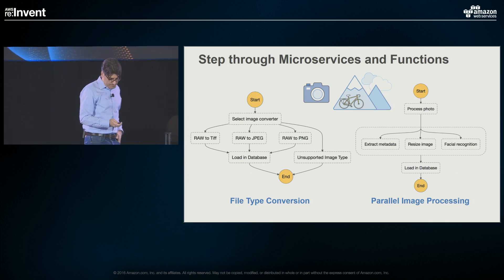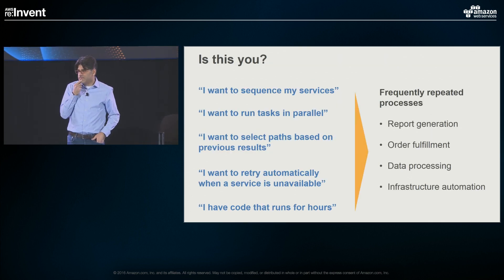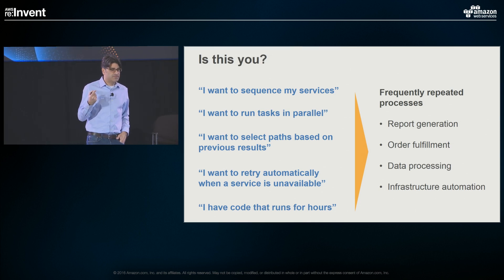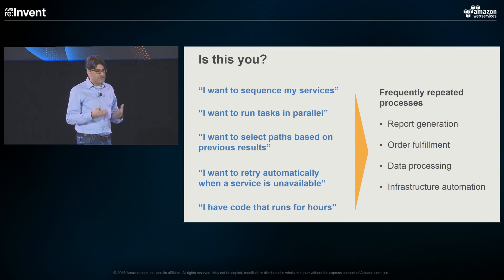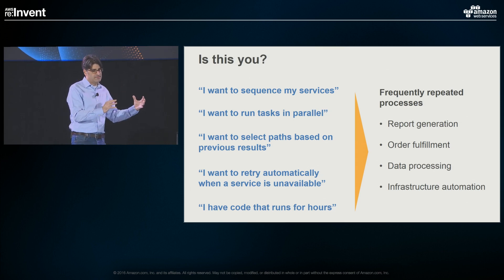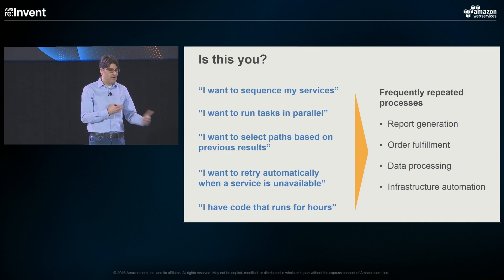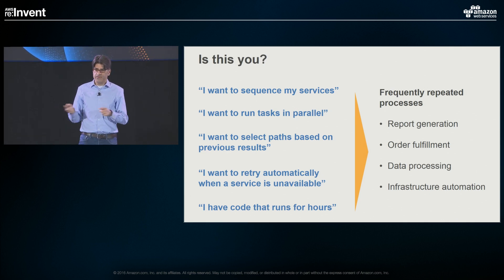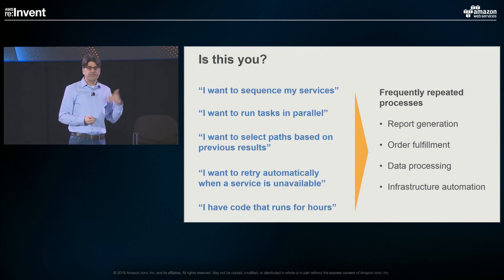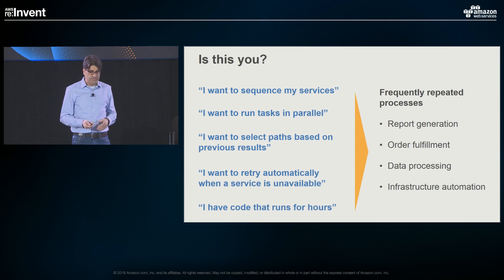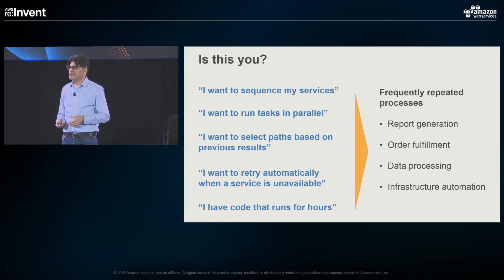These are common patterns. What they have in common is you might do this not for one photo but for hundreds or thousands. When you think about frequently repeated processes — generating reports, fulfilling orders, processing data, automating infrastructure — these are things we do over and over again. So the question is: do I want to run services in a particular sequence reliably? Run things in parallel? Pick paths based on previous results — if A then B, if B then C? If there's a failure, retry automatically? Or have code that runs for hours and know when it's done without babysitting it? These are the kinds of tasks where Step Functions may meet your needs.